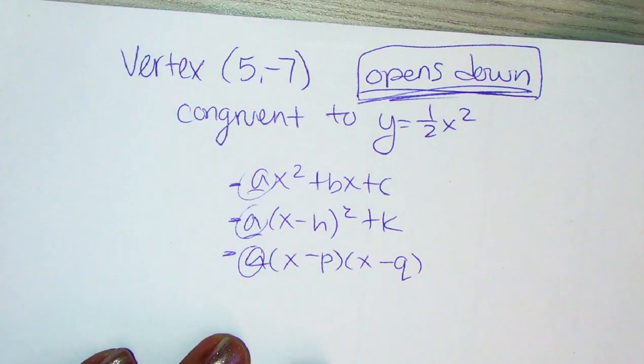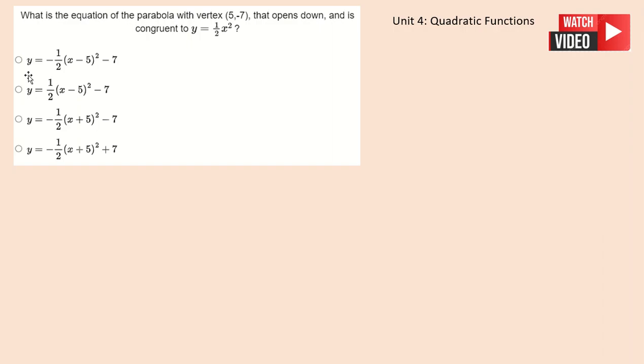So right away, we know that if it opens down, it has to be negative and only the first, third, and fourth have that negative going. They all have negative one half.